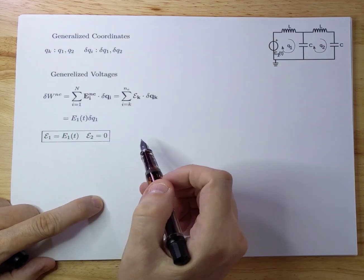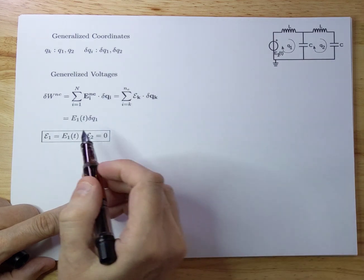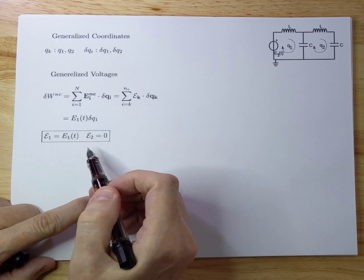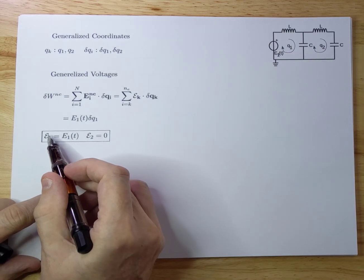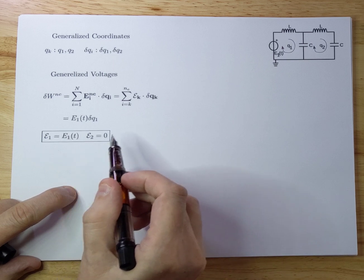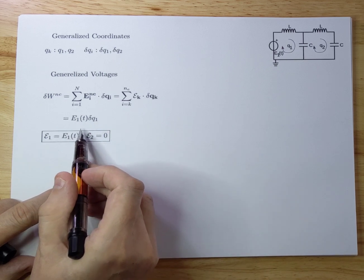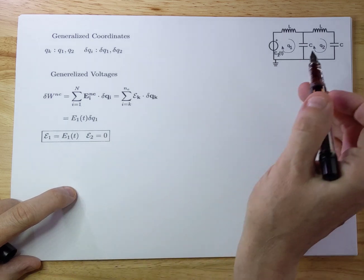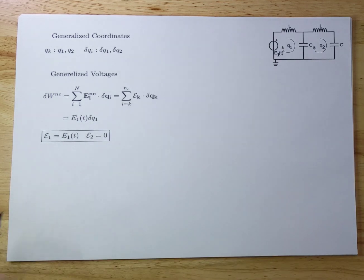The formula of the non-conservative work becomes quite easy. You have E1(t) dQ1. And because there are two generalized coordinates, there's an E1, which is E1(t), and E2 equals zero. Because dQ1 refers to the first generalized voltage, and there's a dQ2 that will refer to the second one. But there is no voltage, so that will be zero.